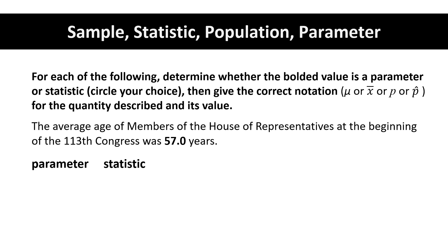The 57.0 is describing the average age of all the members in the House of Representatives. This is a population, therefore 57.0 would be a parameter.